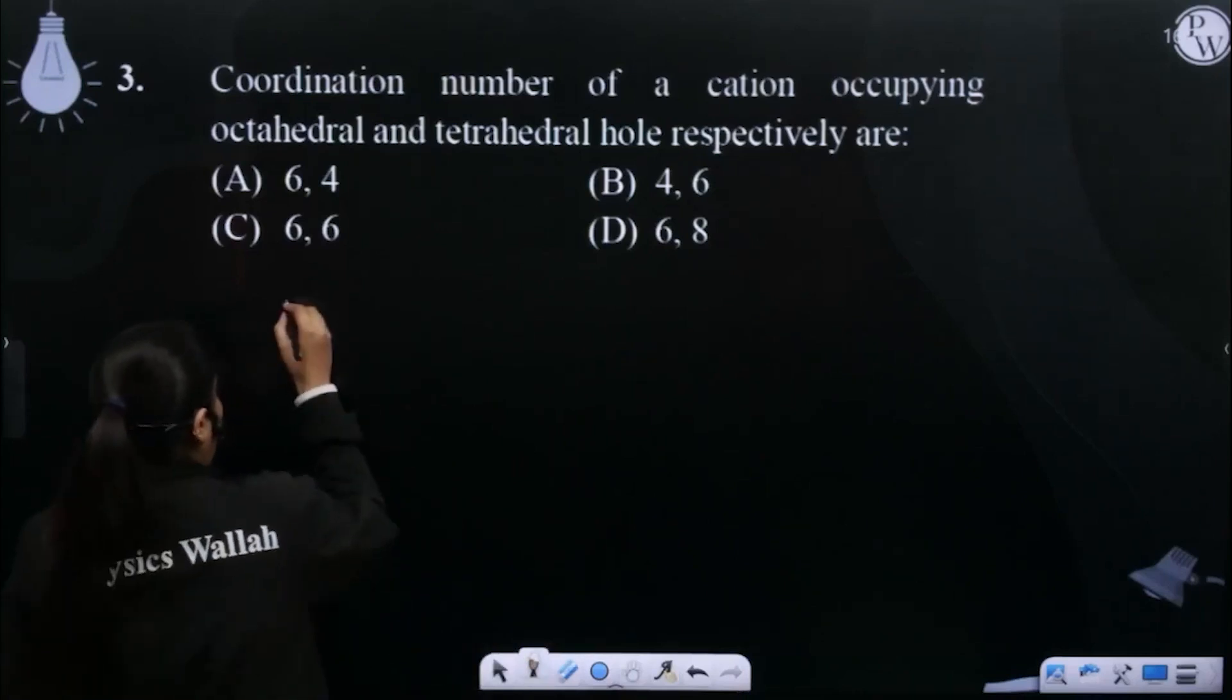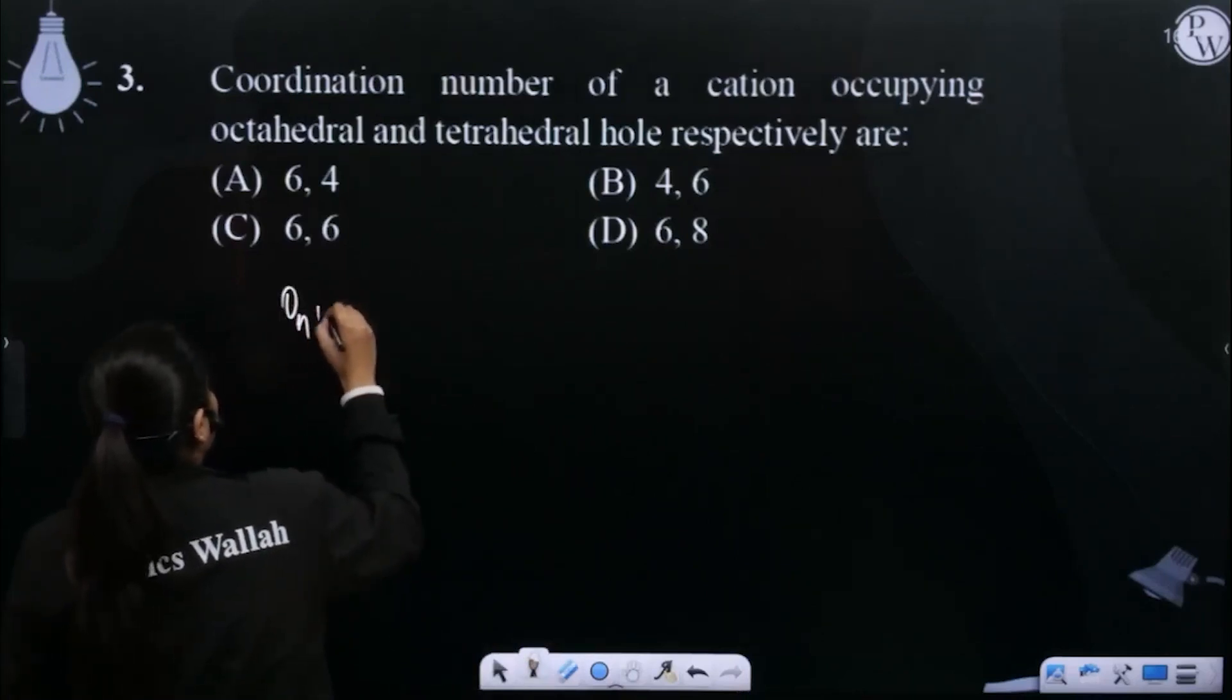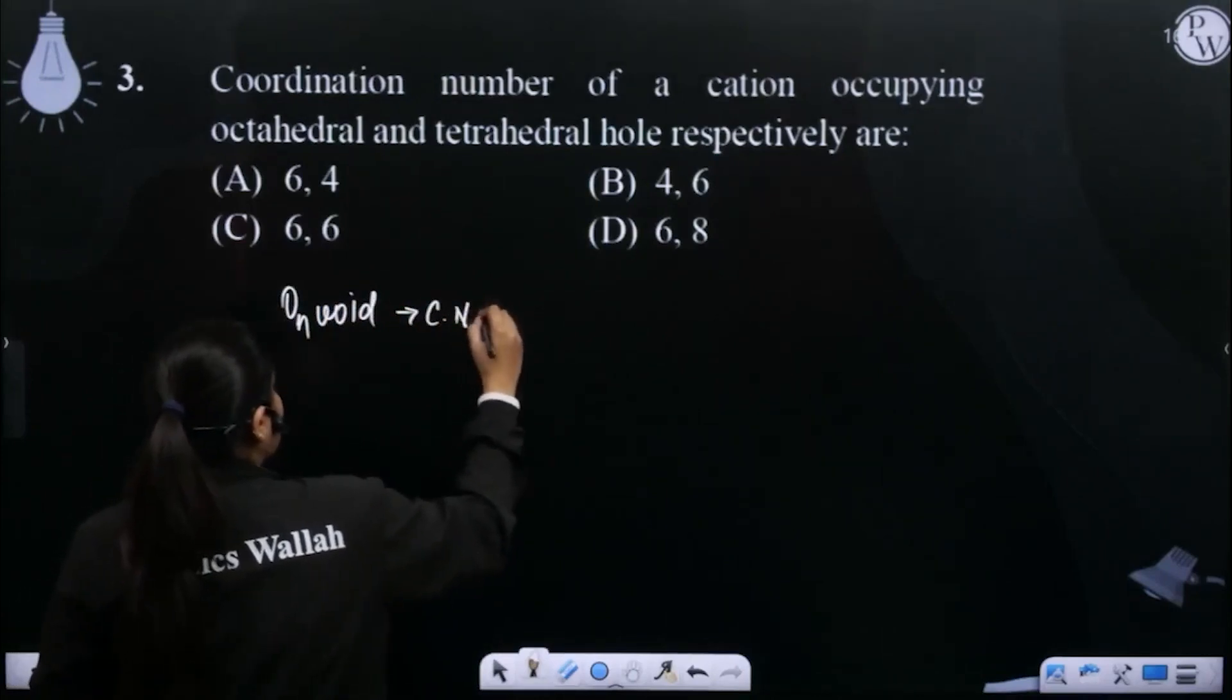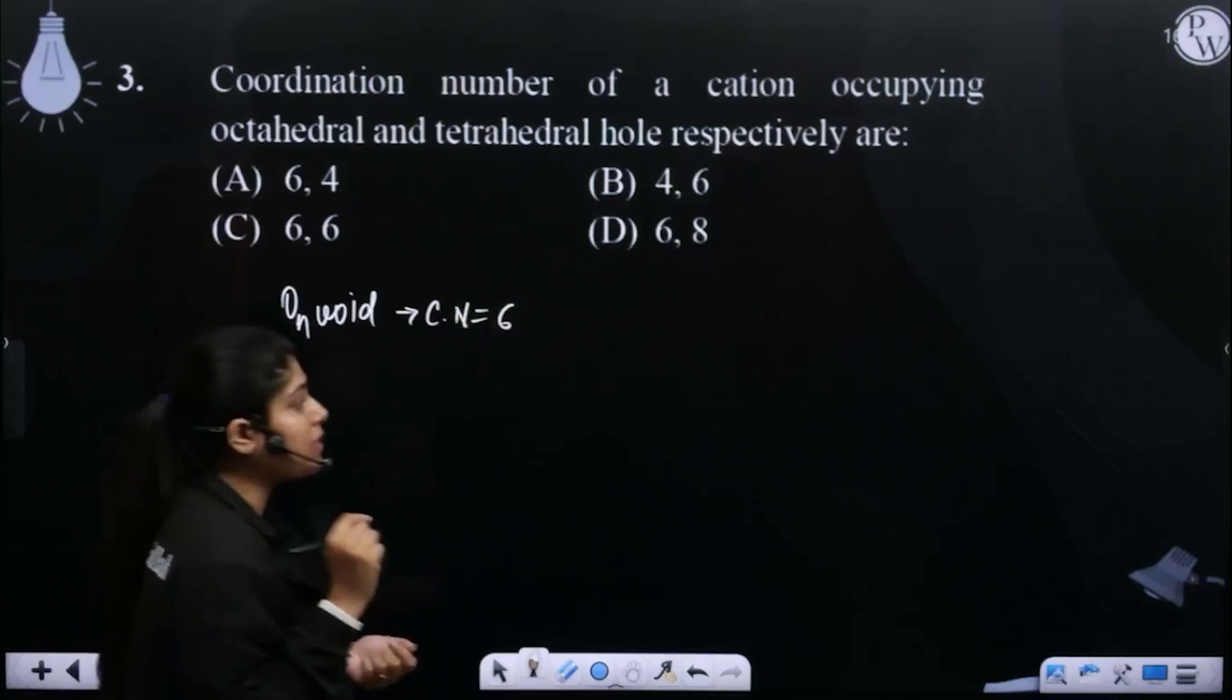If I talk about octahedral void, then what is the coordination number for that? 6, because the octahedral void is surrounded by 6 spheres.